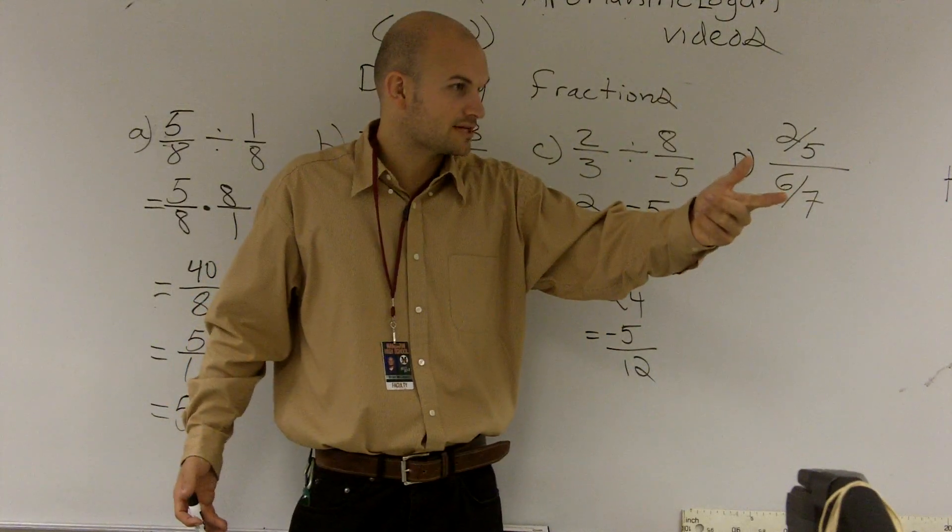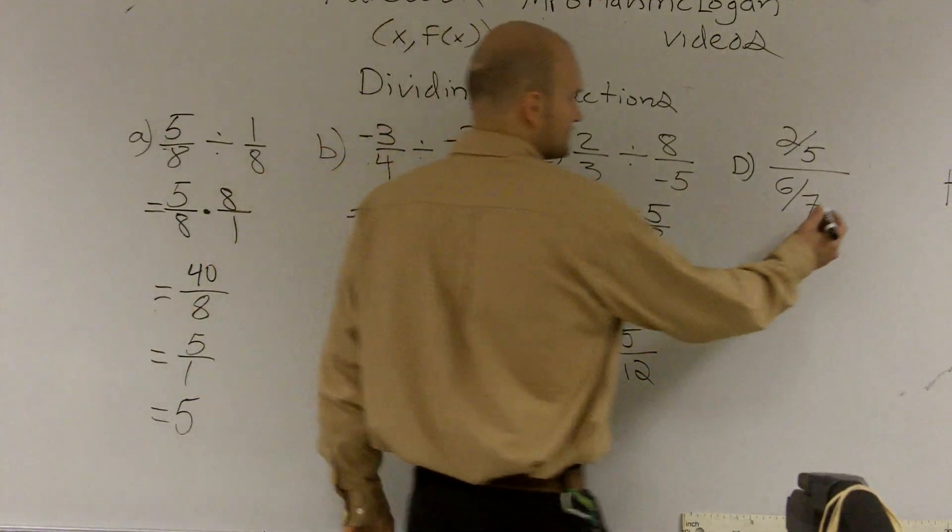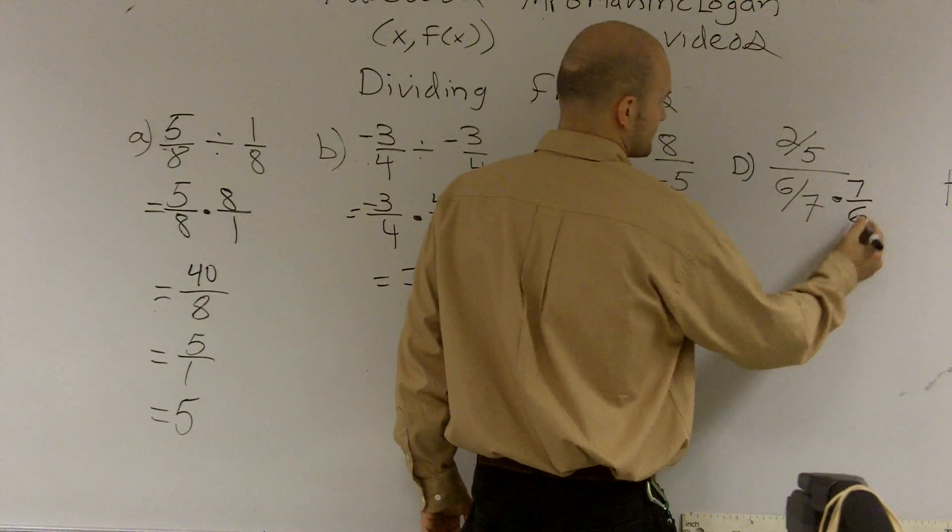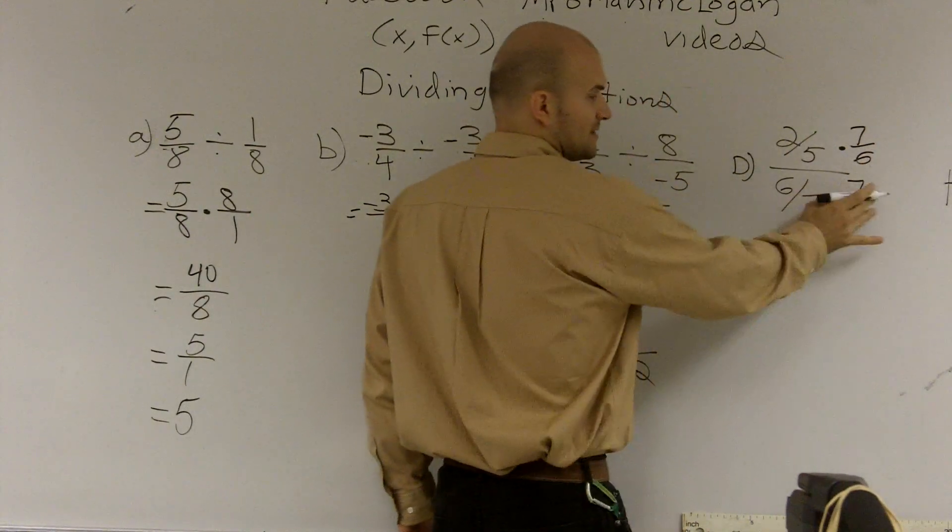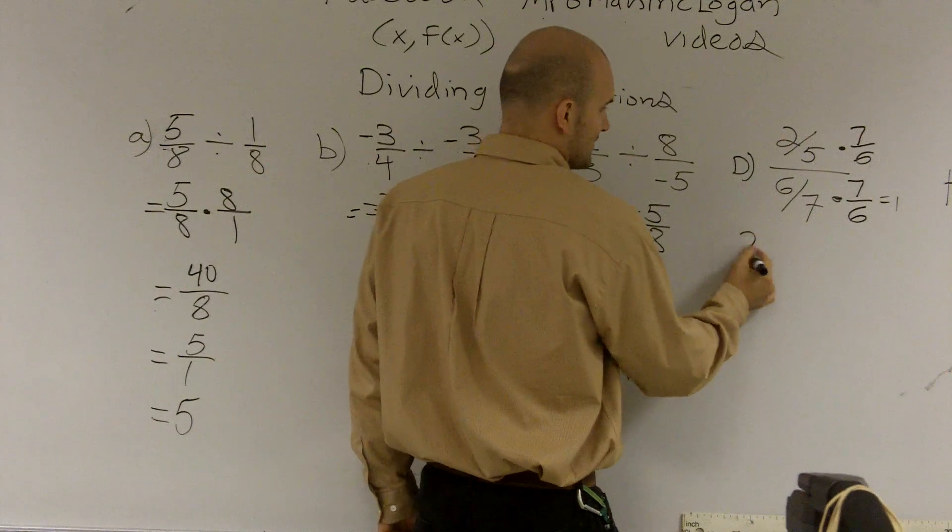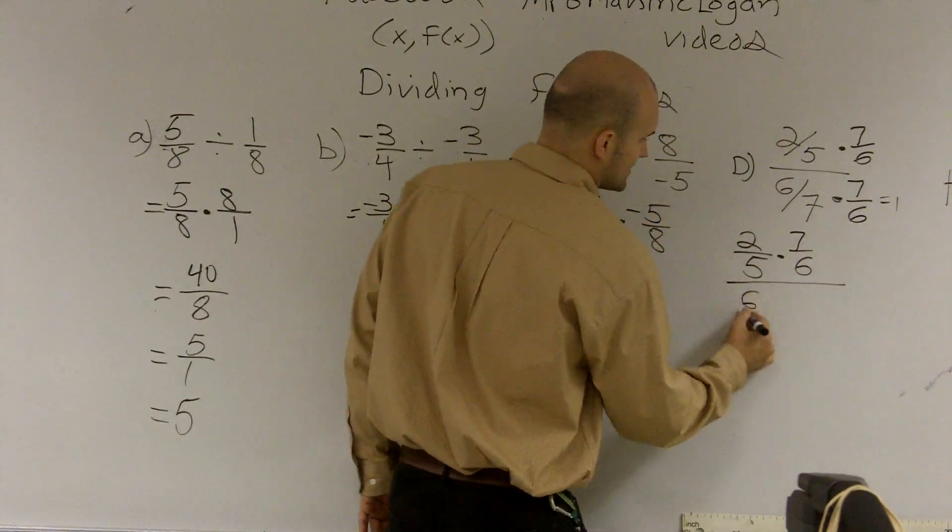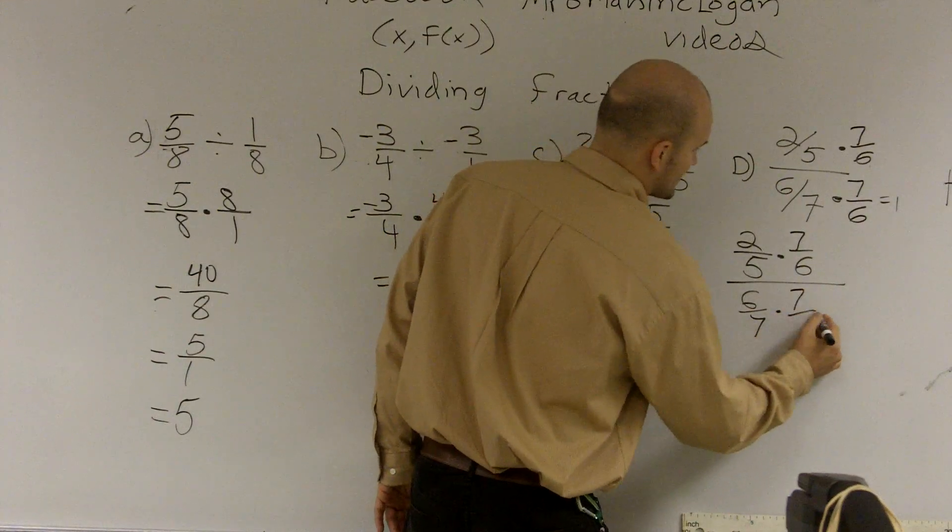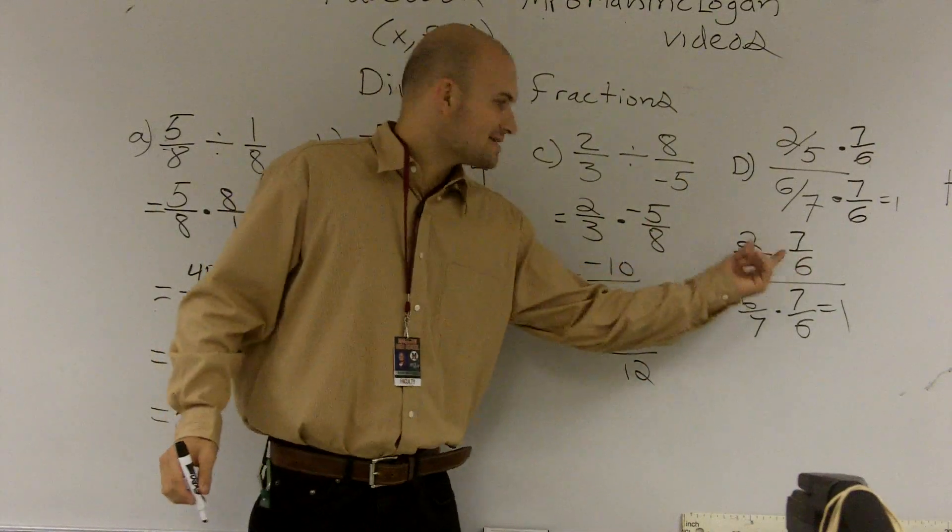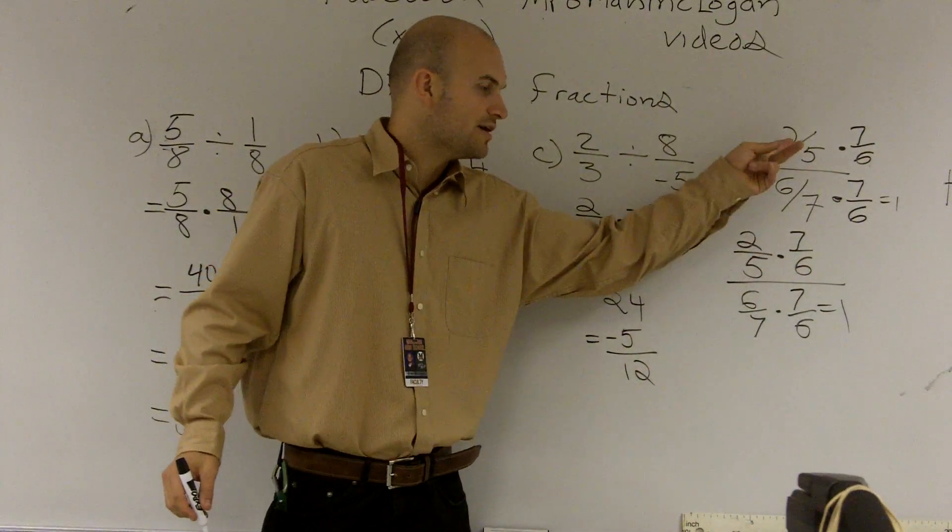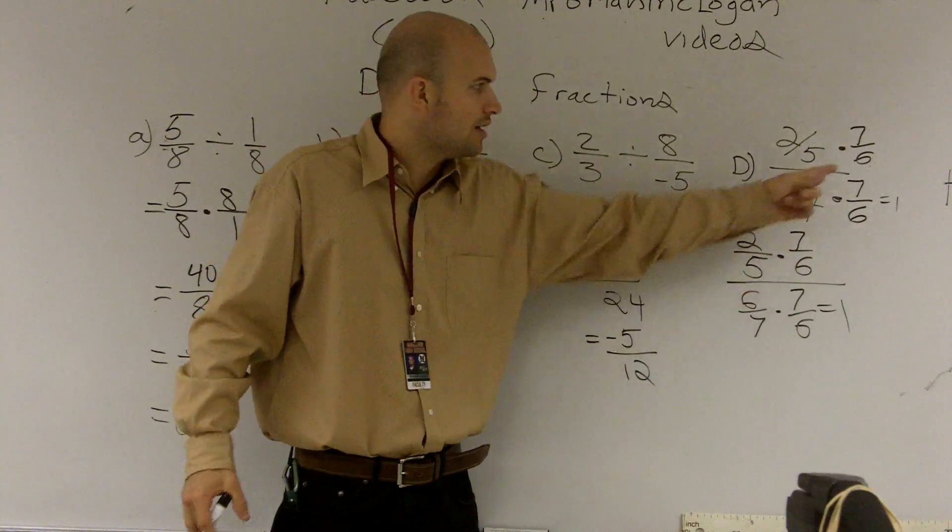So if I multiply the bottom by the reciprocal, and whenever we multiply the bottom, we have to multiply the top. So this becomes 1, right? So I have 2/5 times 7/6 over 6/7 times 7/6. Well, this comes out to 1, right? Well, what is this doing? Look at this. That's the exact problem. When we divide one fraction divided by the other, essentially what we're doing is just multiplying by the reciprocal of your second fraction.